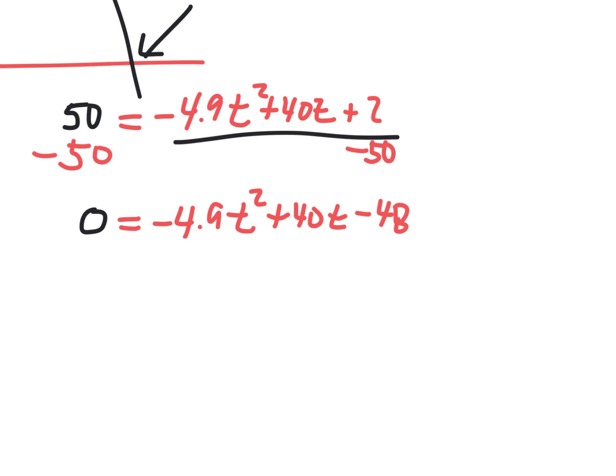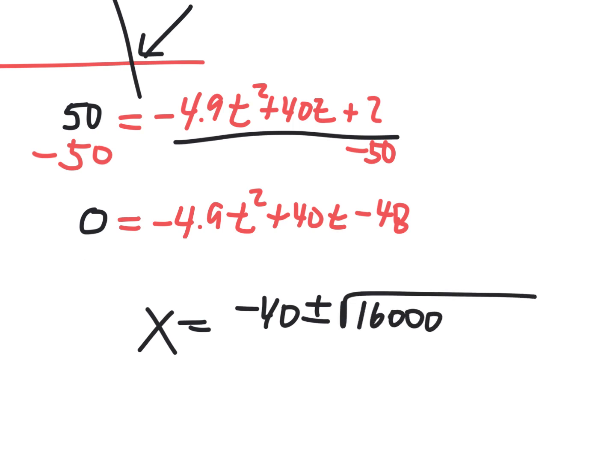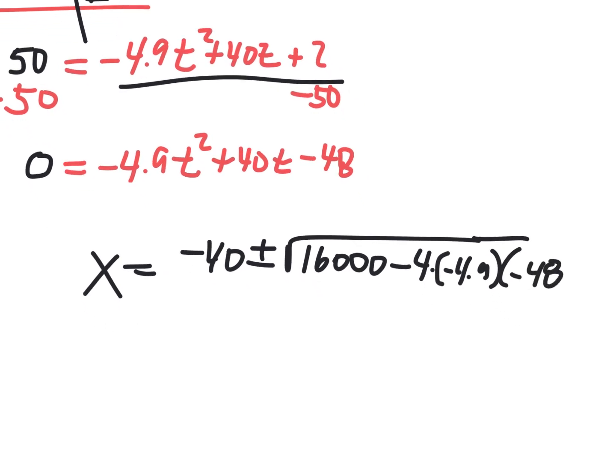This is the part where you've got to do a bunch of grunt work — type in a bunch of decimals. The quadratic formula will solve this. X equals negative B, which is negative 40, plus or minus the square root of B squared — which is like 1600 — minus 4 times A, which is negative 4.9, times C, which is negative 48, all over 2A, which is negative 9.8.